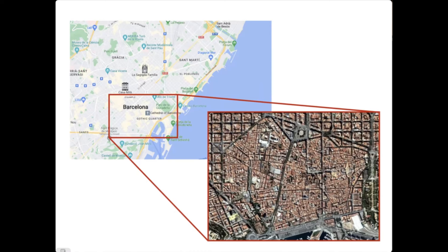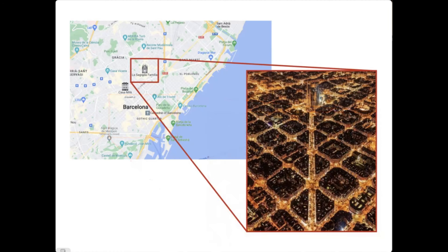But at some point the city kind of outgrew its boundaries. And Cerda, in 1860, did a big urban planning exercise. So beyond the historic old part of Barcelona, you see these very regular blocks, these avenues.